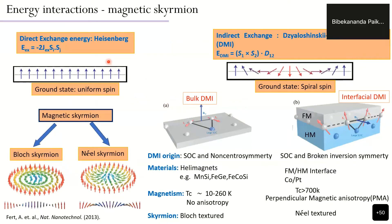The energy interactions leading to skyrmion formation include direct exchange interaction, where two neighboring spins align parallel, and indirect exchange via the Dzyaloshinskii-Moriya interaction (DMI), where two neighboring spins align perpendicular to each other. The competition between direct exchange and DMI, along with other energies, produces a spiral spin structure that leads to skyrmion formation. In interfacial DMI, the ferromagnetic layer spin interacts with heavy metal atoms having large spin-orbit coupling, producing a chiral spin structure.